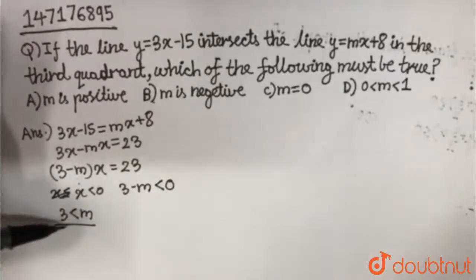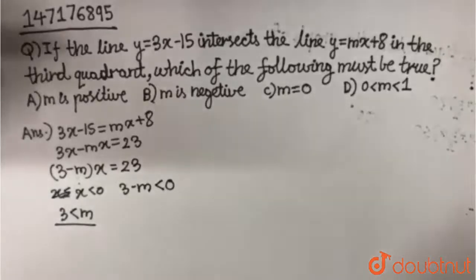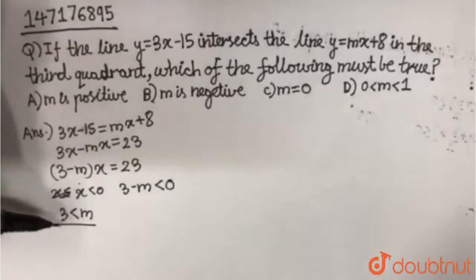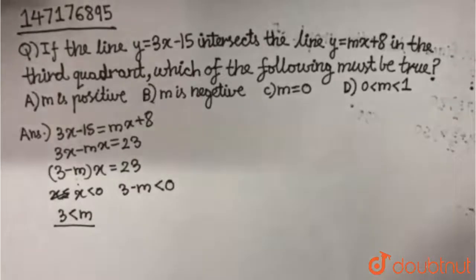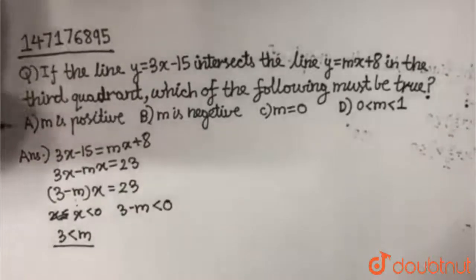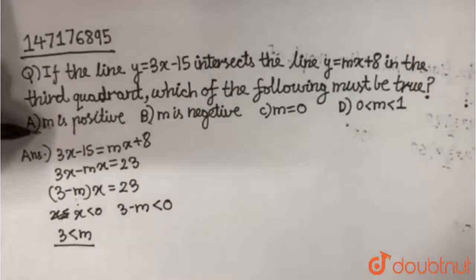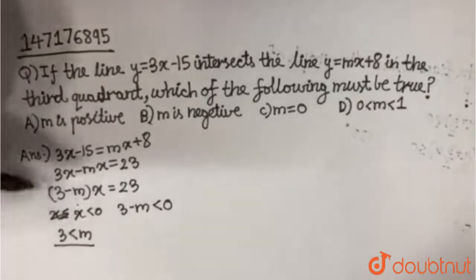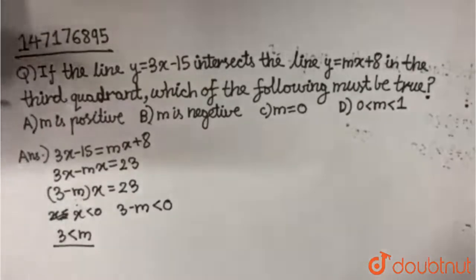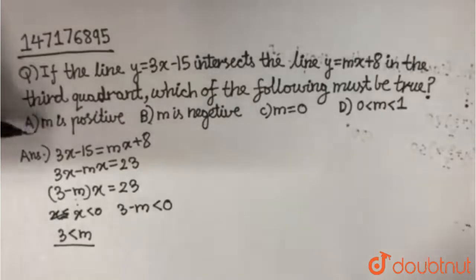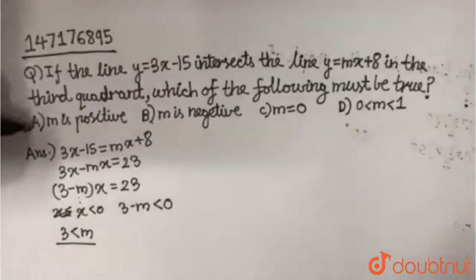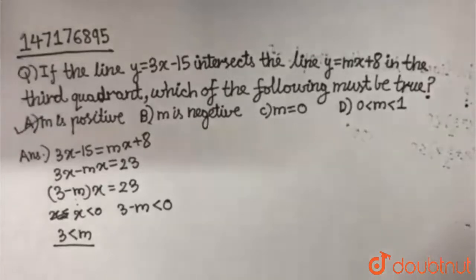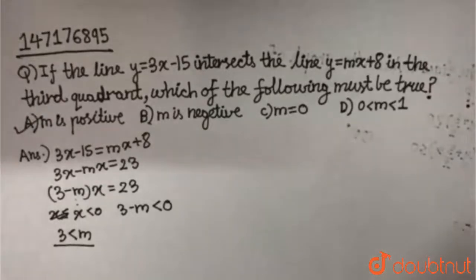When m is greater than 3, m is obviously greater than 0, so m is positive. The option that comes out to be the answer is option A, which says m is positive. If there had been an option saying m is greater than 3, we would have chosen that, but the nearest correct option is A. I hope it's clear.